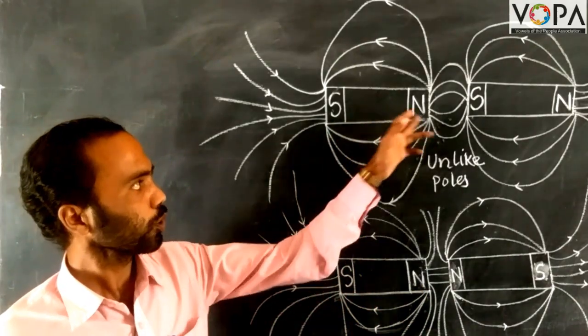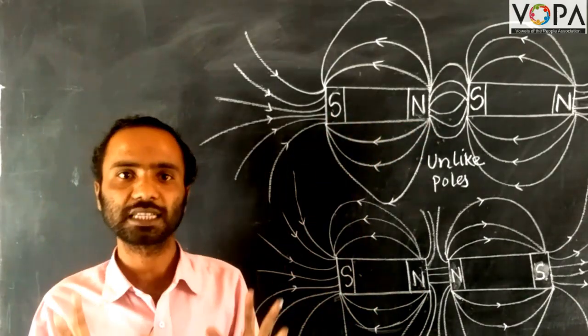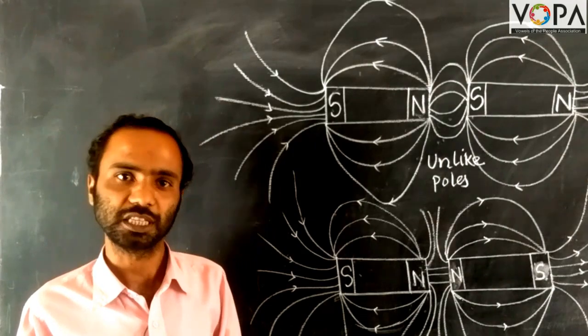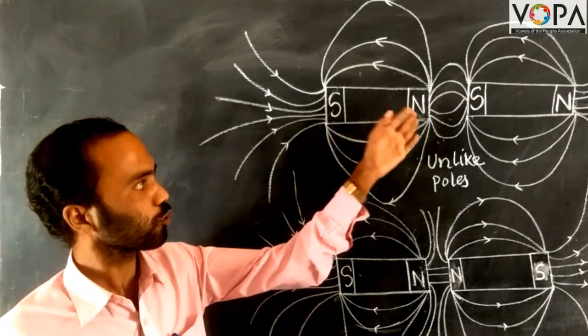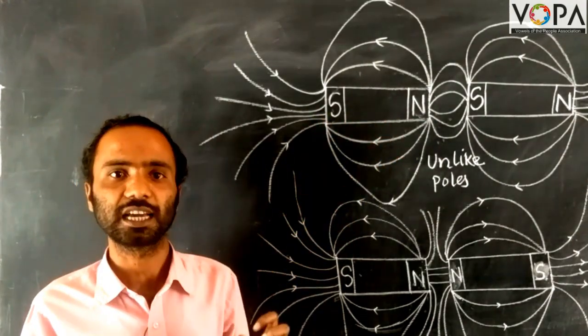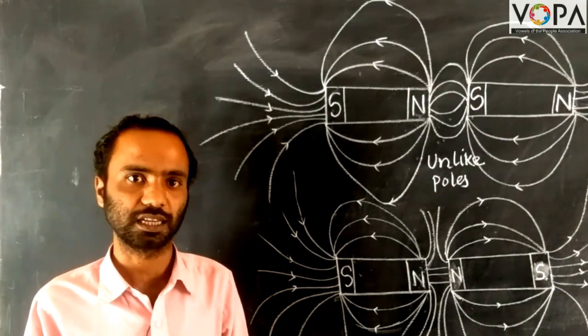Generally, the poles of the magnets have the high strength of magnetism. Near the poles of a magnet, the magnetic field strength is maximum.